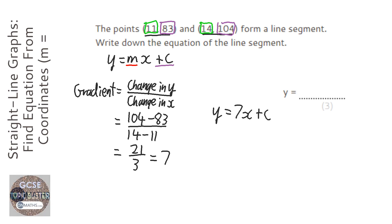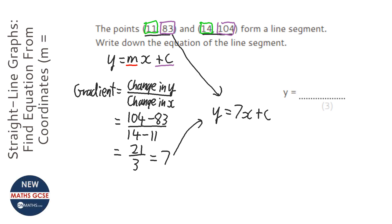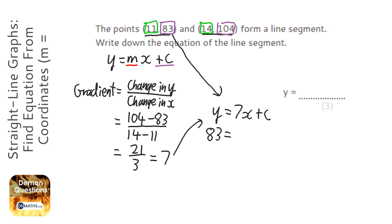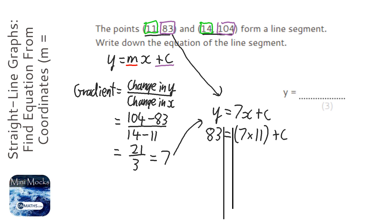To find c, since we've plugged in m, I'm going to put in the values of x and y from one of the coordinates — and you can pick either one, either one should work. For the first coordinate I've picked, I've got 83 as our value of y, and then 7 times the value of x, which is 11, plus c.